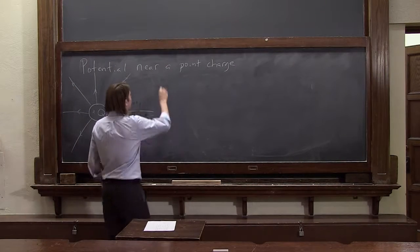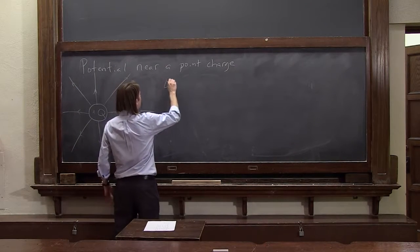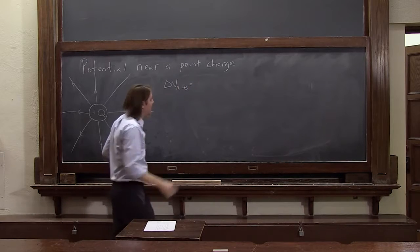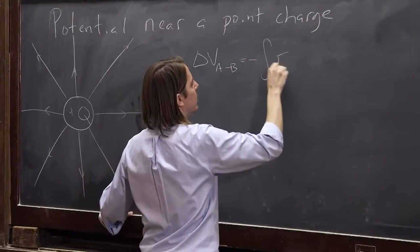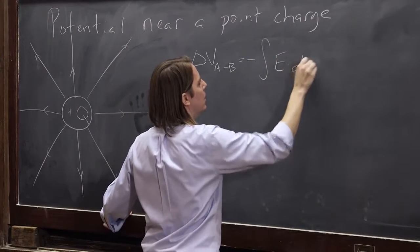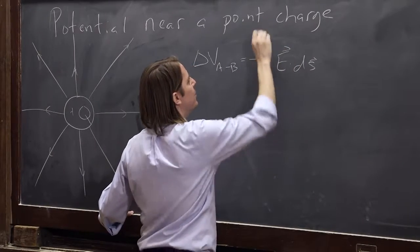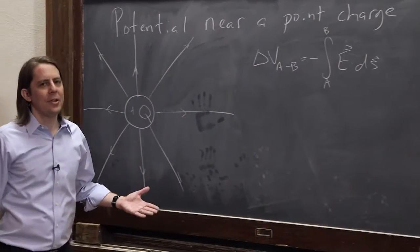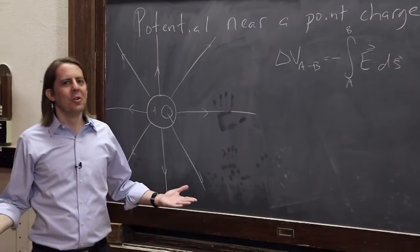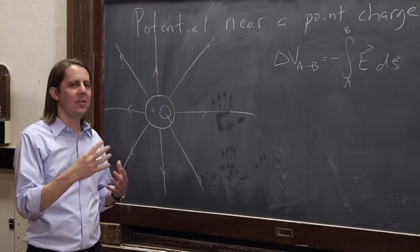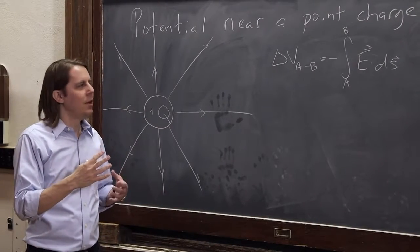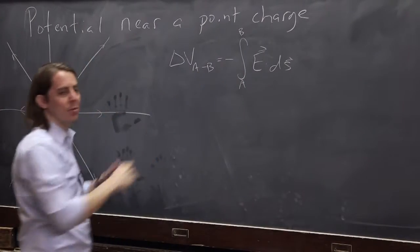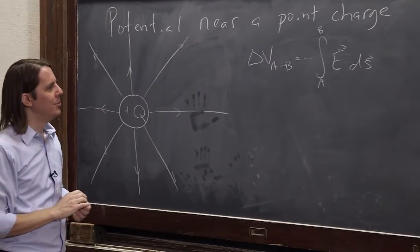What we've derived so far is that delta V from a to b equals minus the integral of E dot ds from a to b. This has nothing to do with the point charge specifically — we've used a point charge to illustrate things, but this is just in general always true. That's how we define the potential.